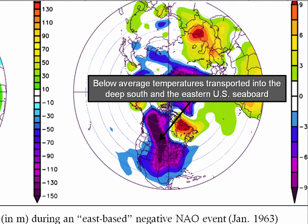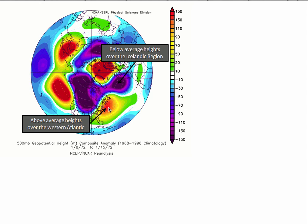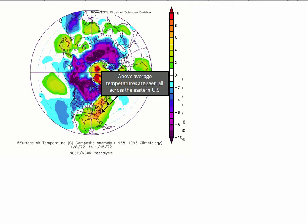On the other hand, when you have a positive North Atlantic Oscillation, you end up with a very progressive pattern. Storms are more likely to come up towards the Great Lakes and the St. Lawrence River Valley, and you end up with a warm weather pattern for the eastern United States. I hope that helps explain what is a North Atlantic Oscillation and how it impacts your weather in the eastern United States.